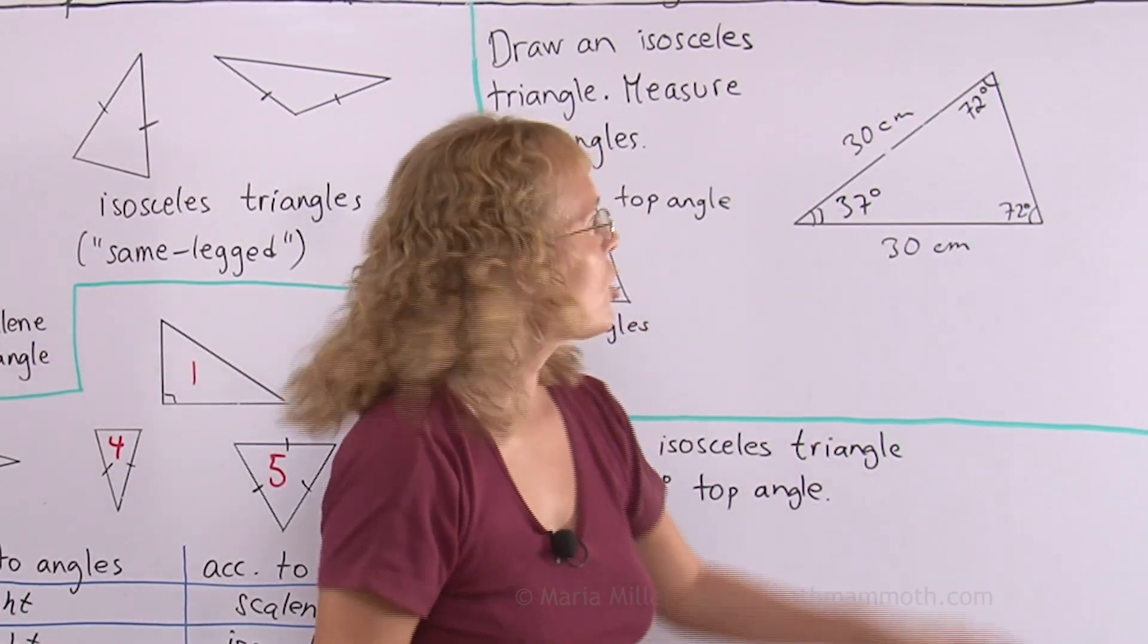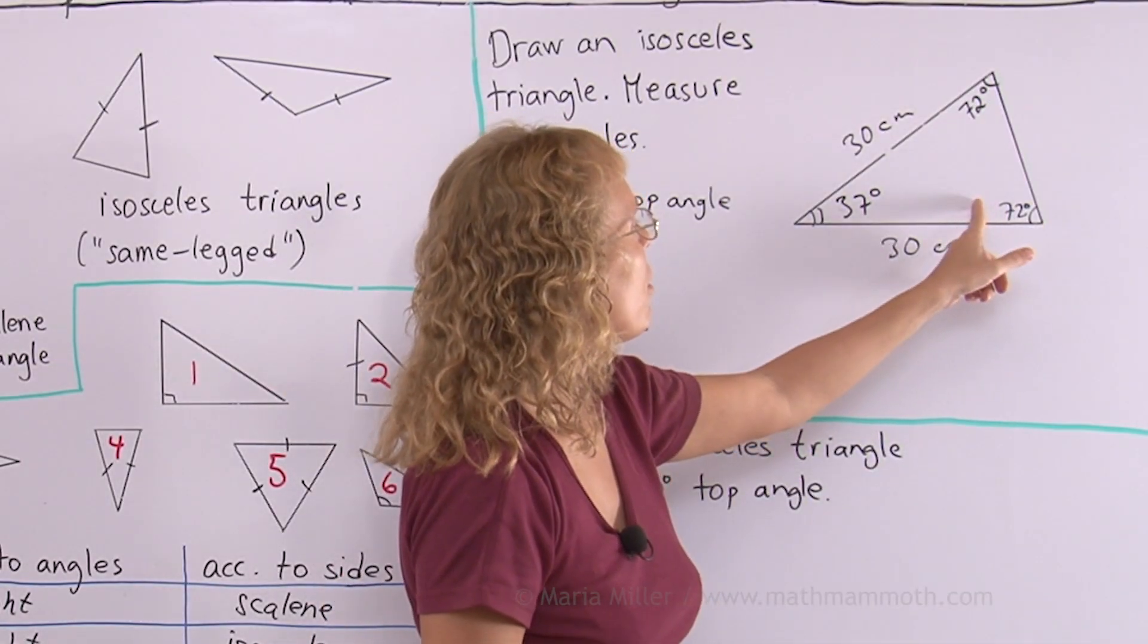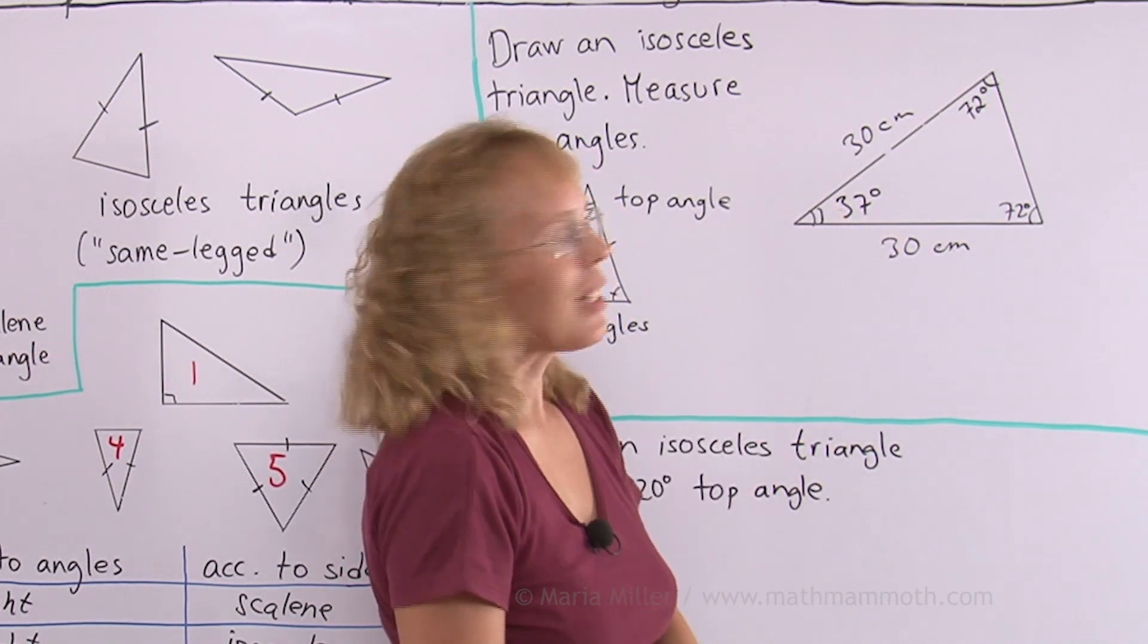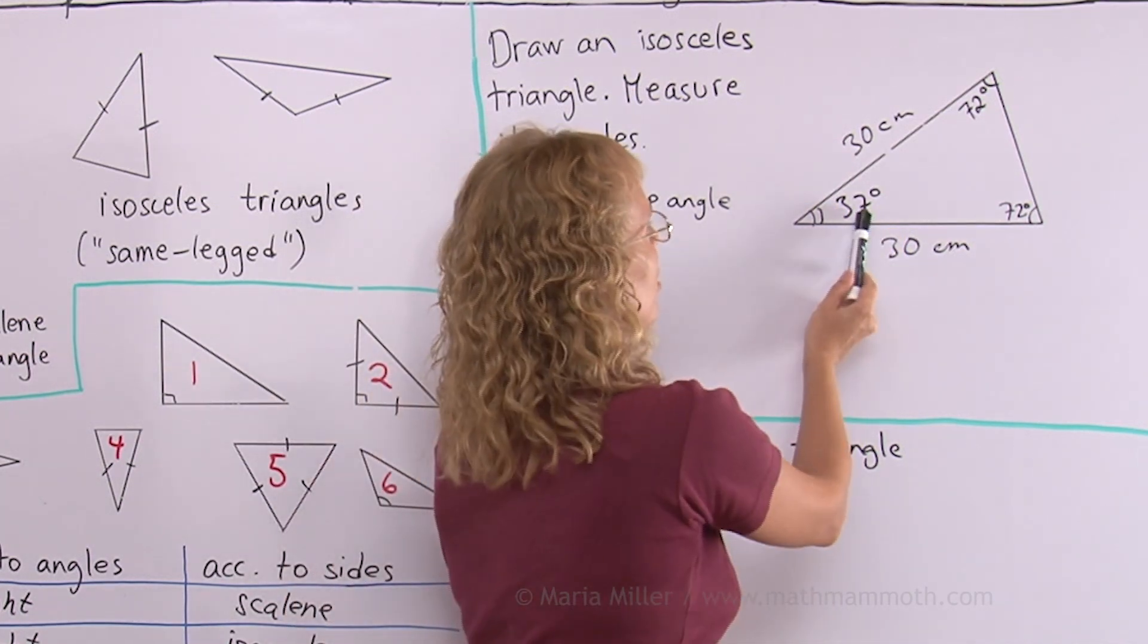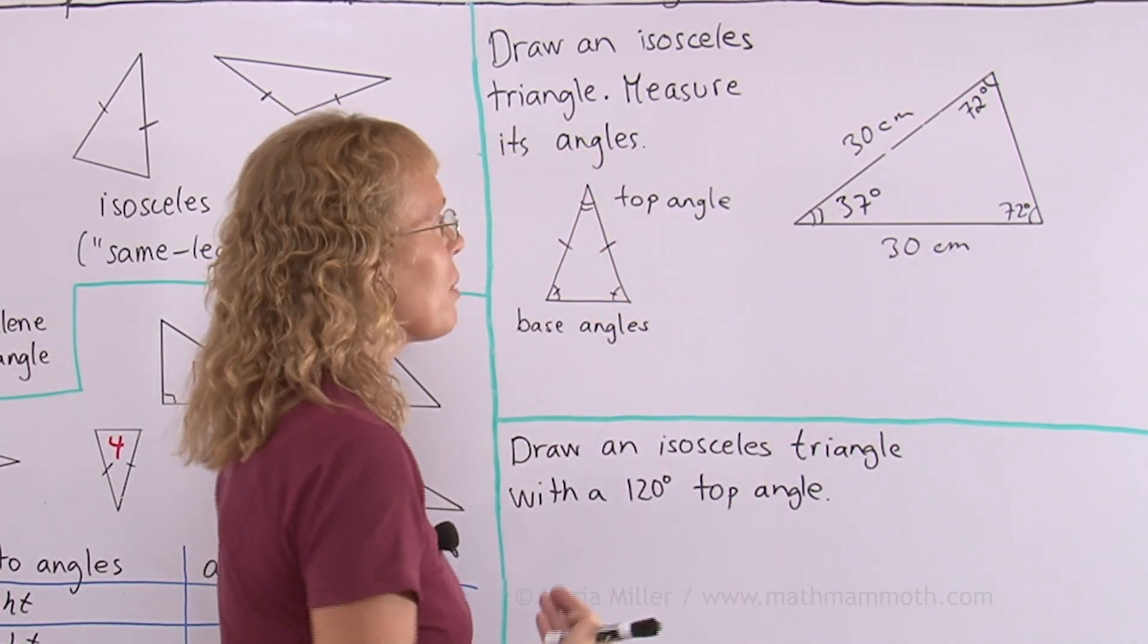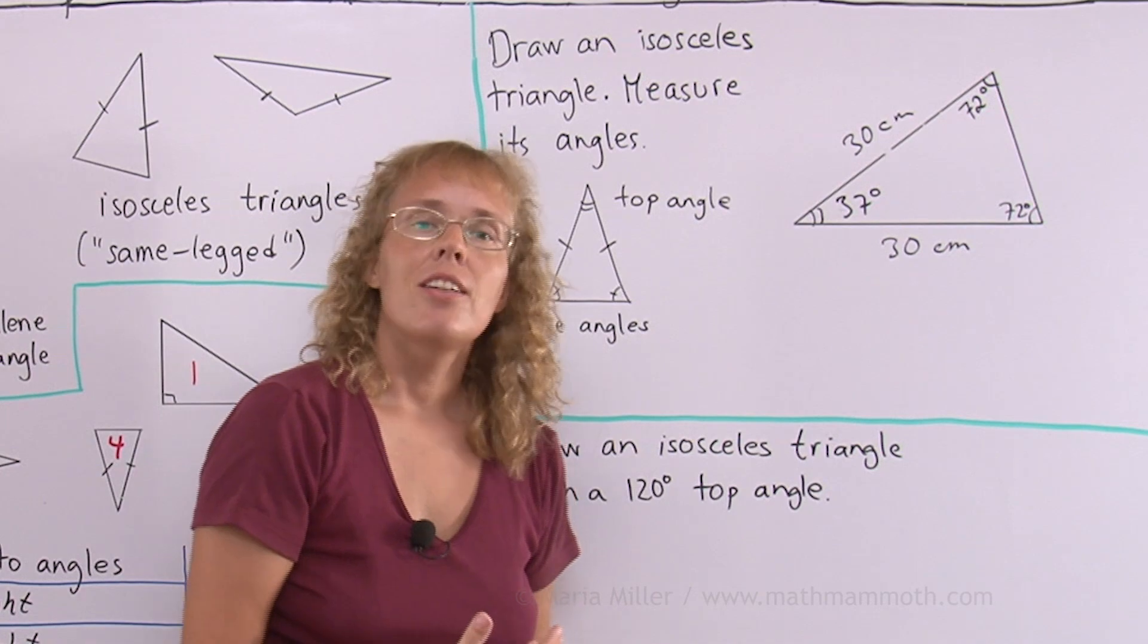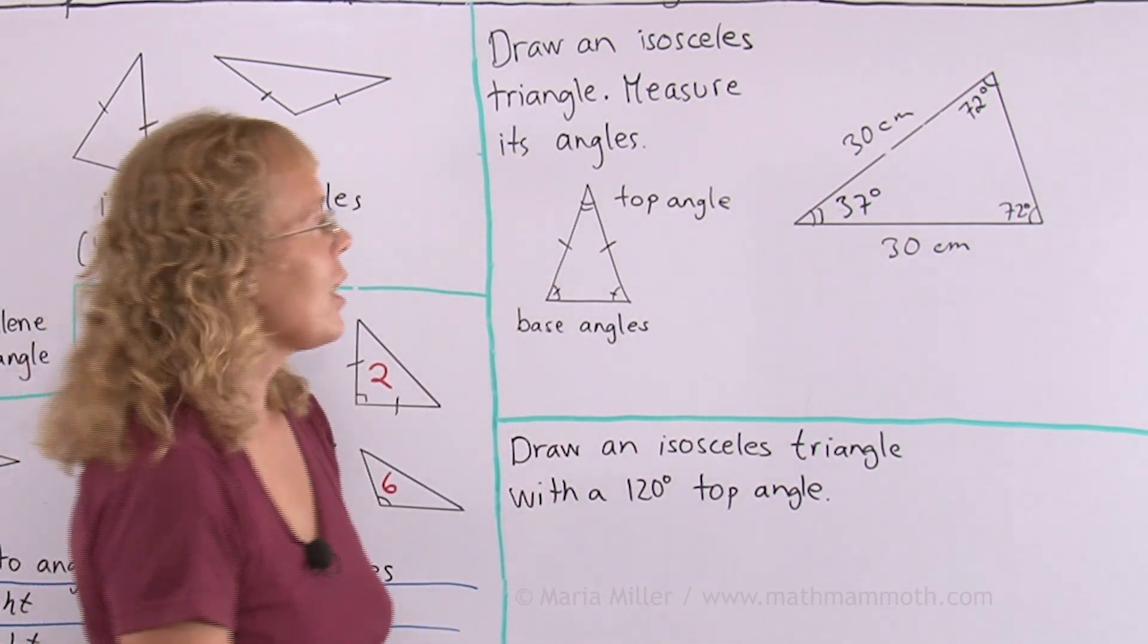If I add these angle measures I get 144, 174, and 181. So I can see this probably should have been 36 degrees. But it's hard to measure and draw accurately. In a triangle the three angles add up to 180 degrees.